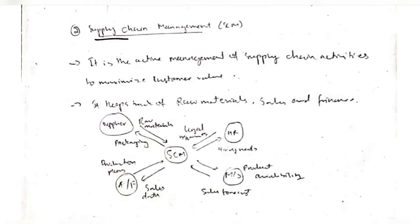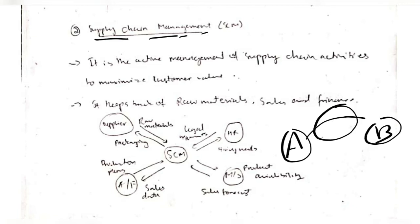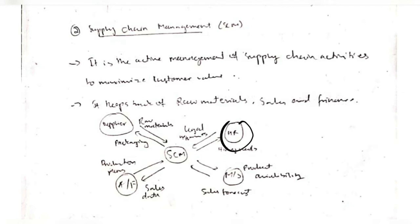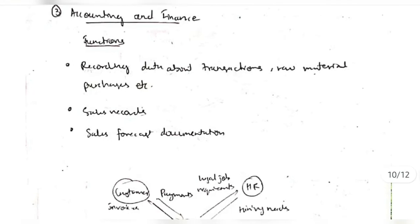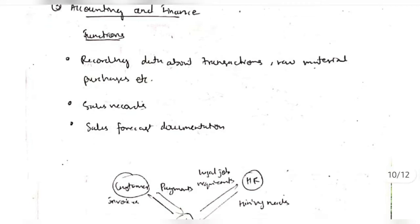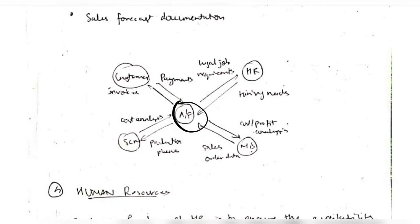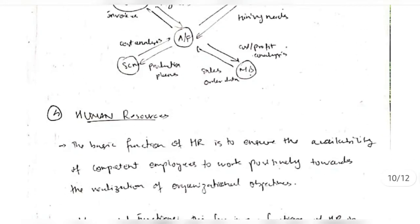Supply chain management ensures that there are smooth processes between the product start and end. The supply chain is managed by SCM. Its connections are with HR, marketing and sales, accounting and finance, and the supplier. Moving on, accounting and finance records the data about transactions, raw materials, and purchases. It also has the sales record and sales forecast documentation. Accounting and finance keeps track of all records of transactions, with connections to each of the other domains.